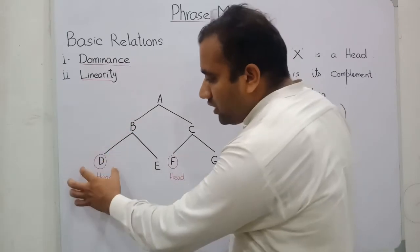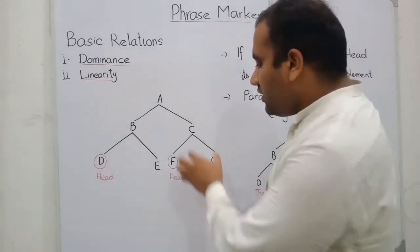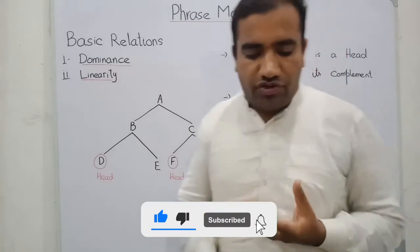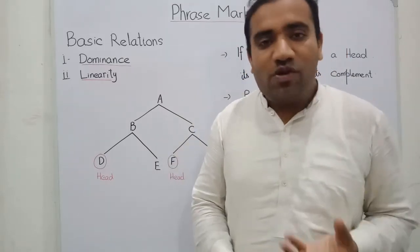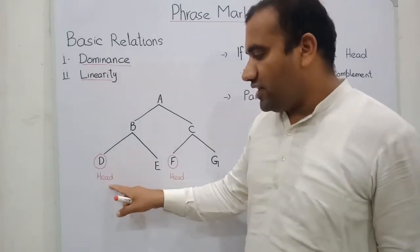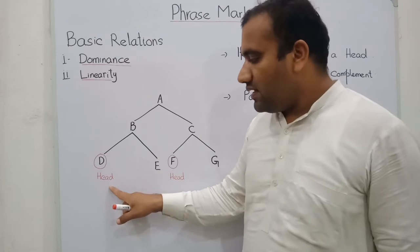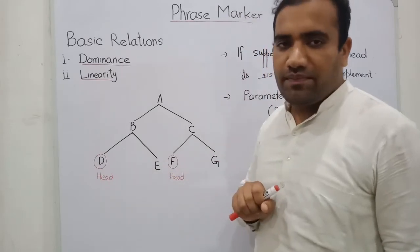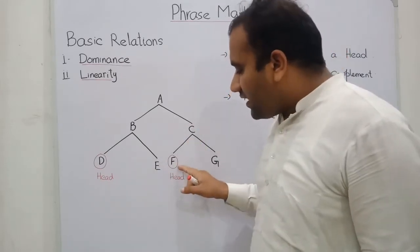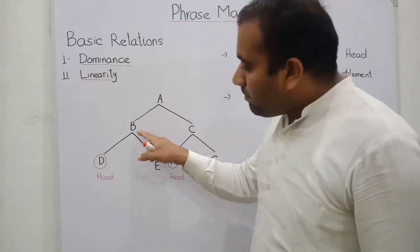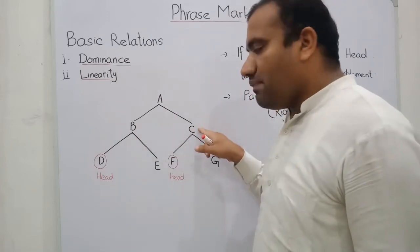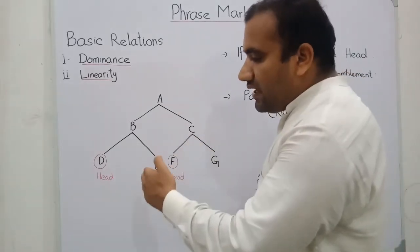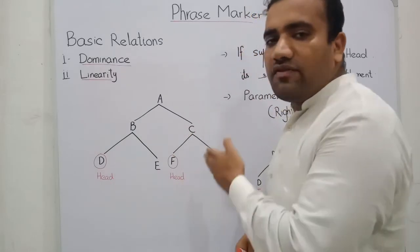B is dominating equally over D and E; similarly, C is dominating equally over F and G. If we suppose that D is the head, then E is the complement of that head; and if F is the head, G is the complement of F. C is the complement of the head, and we can say the head has one position and the complement has one position.